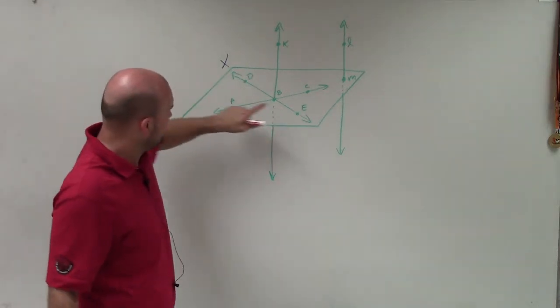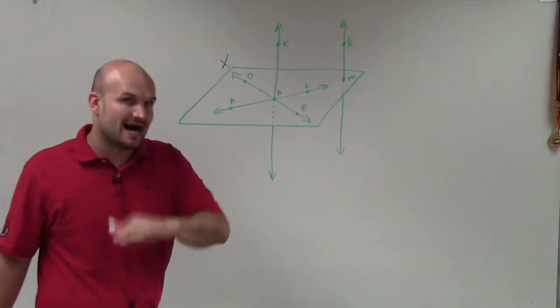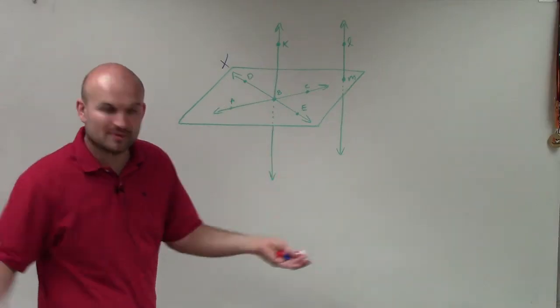I have these two lines, DE and AC. Those are on the plane. That's at least what this picture is supposed to represent.